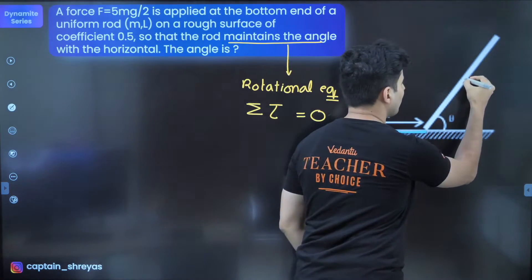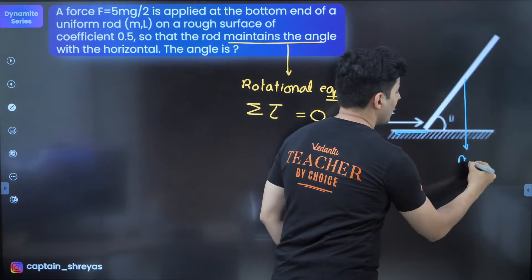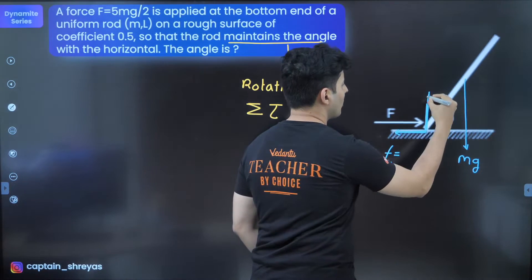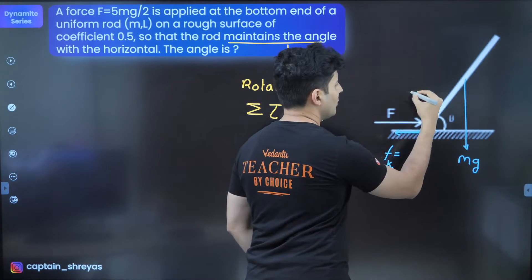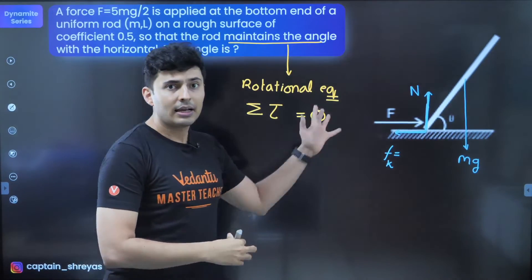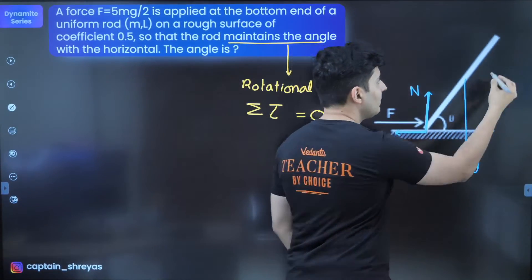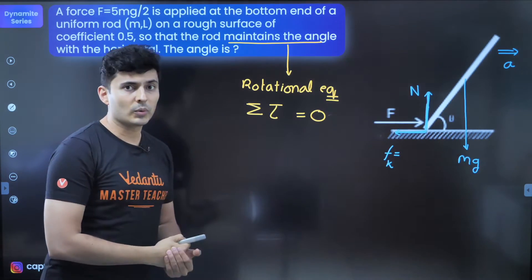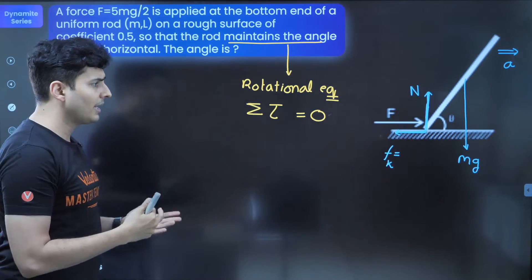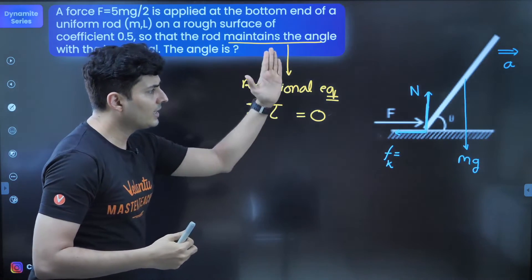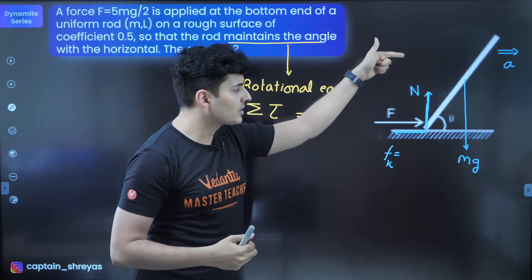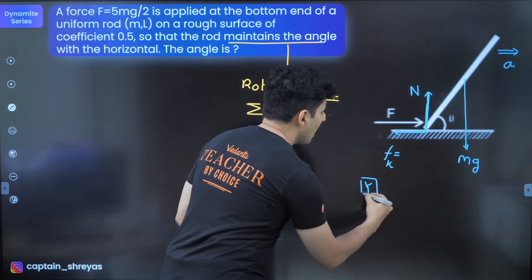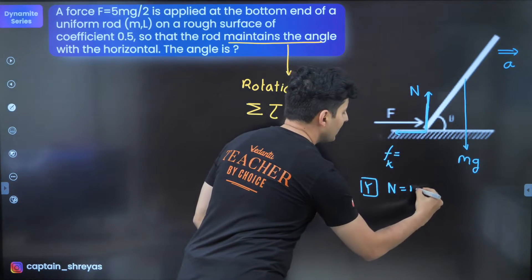Next is Mg. Mg will always act from the center of mass. Obviously, at this point of contact, there will be some normal. There will also be a normal reaction from the point of contact. The result of all of this will be that this entire system will accelerate with some value A, which I do not know. Let's start writing down whatever we can write. First of all, in the y direction, I can see that there is a normal force and there is Mg. So if I write the equations in y direction, I will see that the normal force will be equal to Mg.